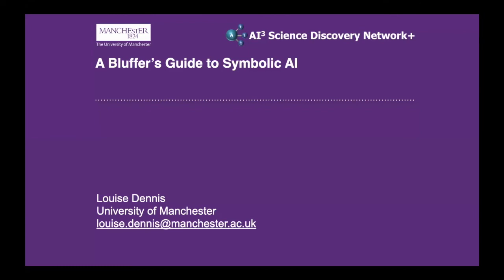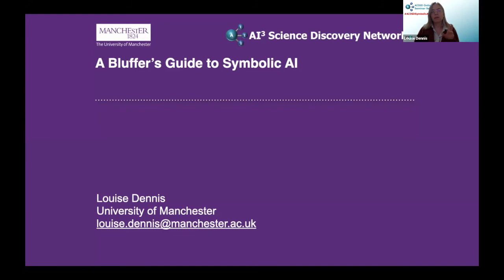Symbolic artificial intelligence — also referred to as good old-fashioned artificial intelligence — is something that's not talked about much these days in the press. You see quite a lot of definitions of artificial intelligence that don't really include the kinds of techniques and technologies that make up symbolic AI. What I'm aiming to do in this talk is give an overview of the roots of this bit of the field, the specific sub-areas within symbolic AI, and some thoughts about how it can combine with machine learning and neural network systems that currently make up the bulk of public consciousness about what AI involves.